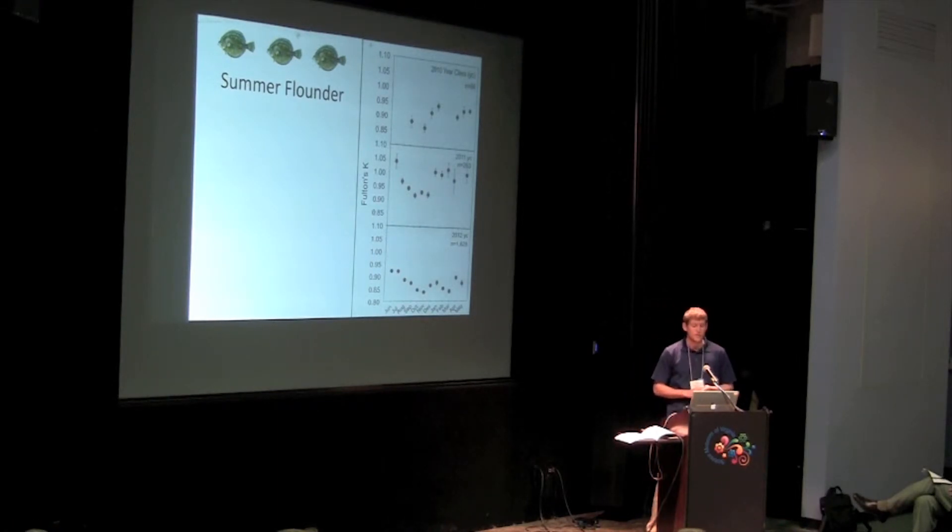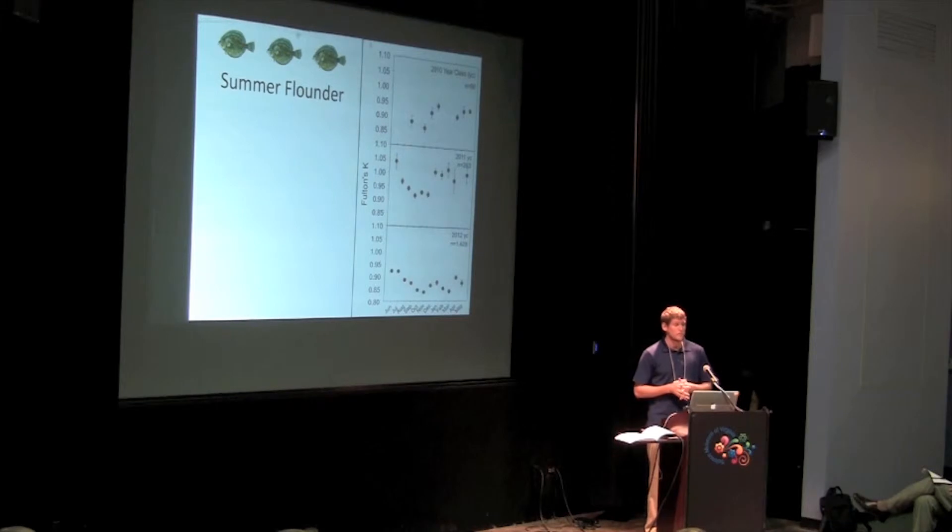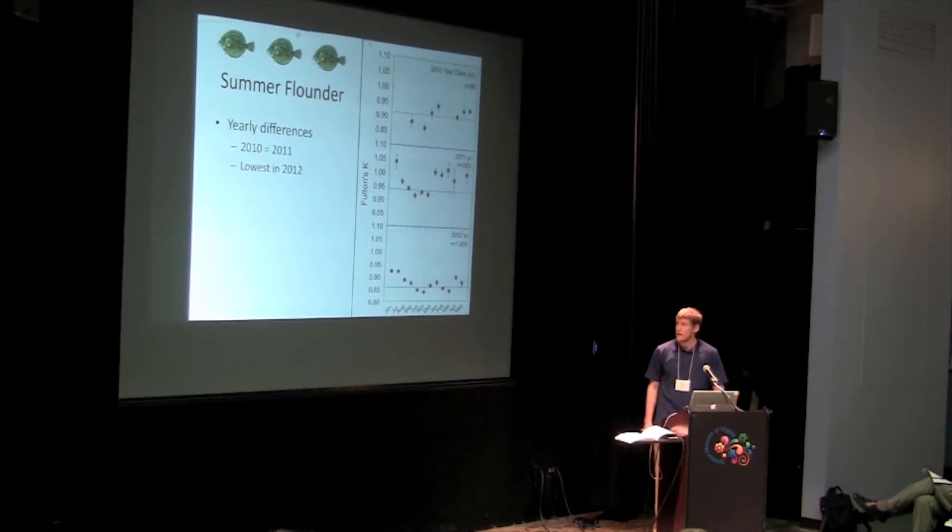To look at some of the results from this effort, here for summer flounder, we see trends in condition throughout the year determined by those length to weight ratios from 2010 to 2012. Those dashed lines highlight the average condition each year, and we found that condition was very similar between 2010 and 2011.